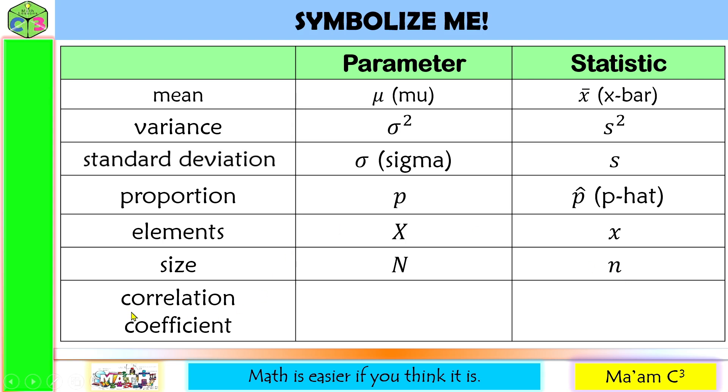For correlation coefficient in parameter, we use rho. And for statistic, we use small letter r.